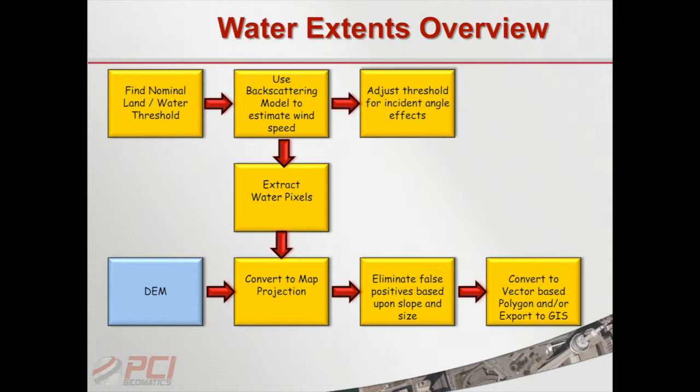Having metadata and all that sort of stuff is very important. It's one thing to have an image, but it's more important to extract information from that image and convert it into a nice map — geocoded however you want. You can compare it to last year's data set or next year's. Canada and MDA in particular have done a great job developing a great radar, and we want to extract the maximum amount of information. If you have a DEM, we convert it to a map projection, eliminate false positives, and convert to a vector-based polygon system that you can export to other GIS systems.